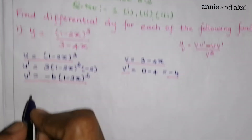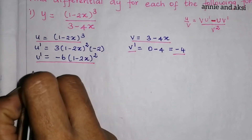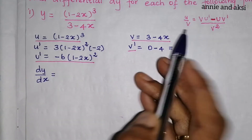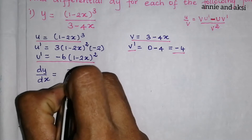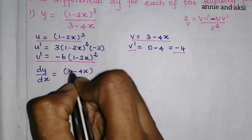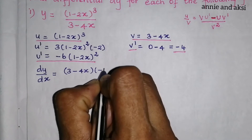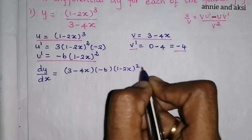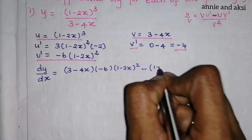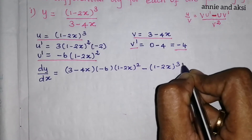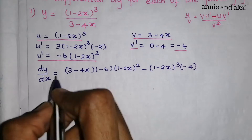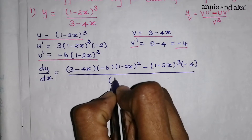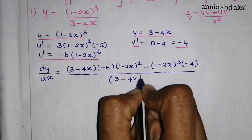We substitute to find dy/dx. dy/dx is equal to: v into u' minus u into v', all divided by v squared. That is: (3 minus 4x) into (minus 6)(1 minus 2x)² minus (1 minus 2x)³ into (minus 4), all divided by (3 minus 4x) the whole square.